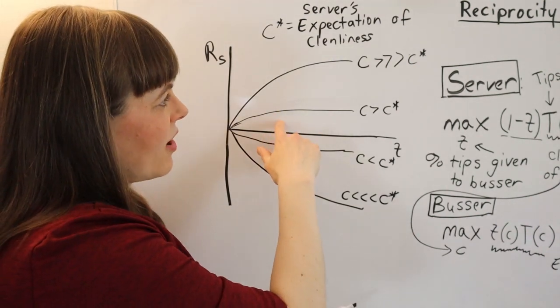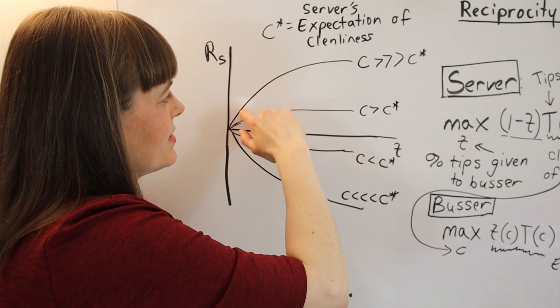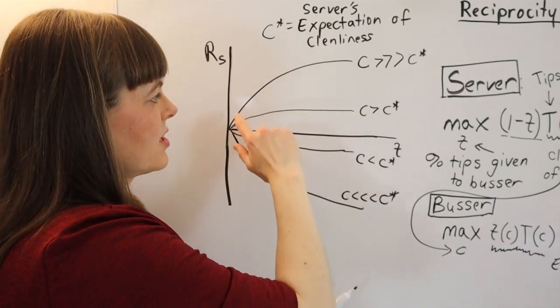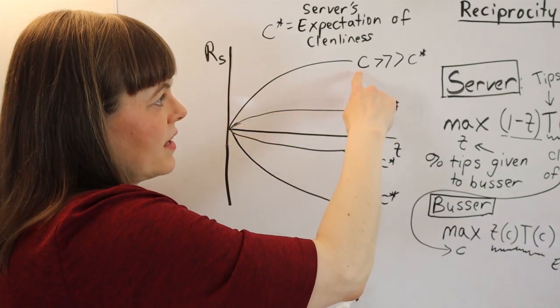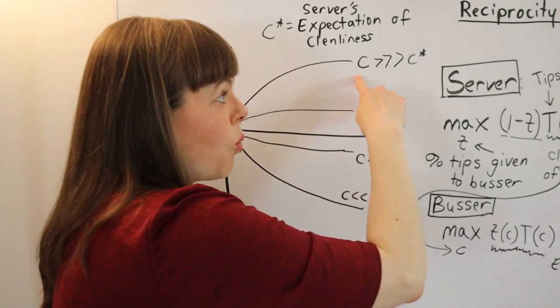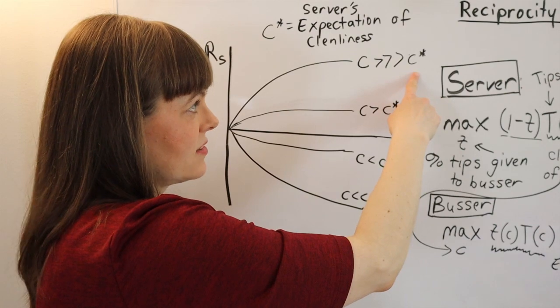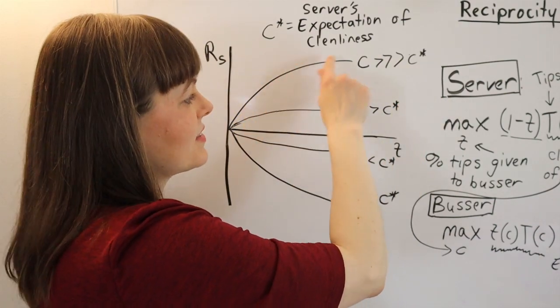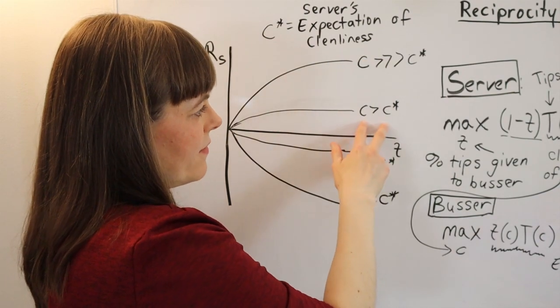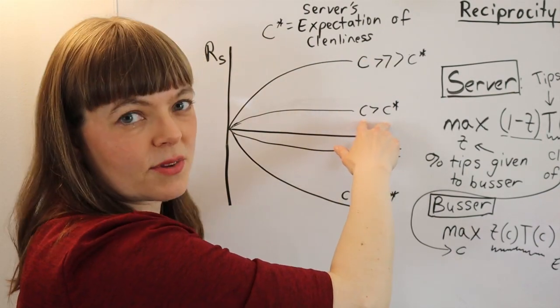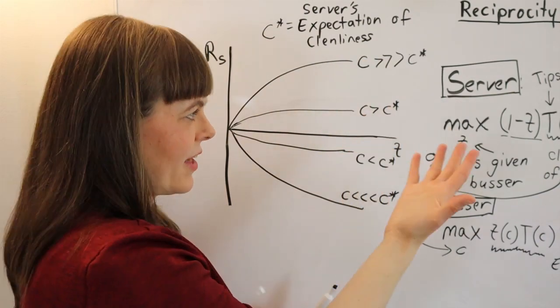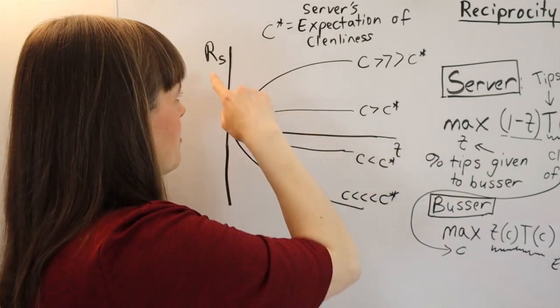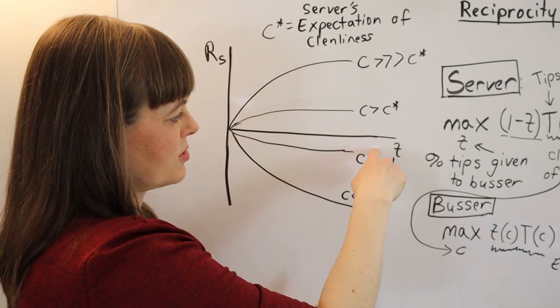That expectation is going to be important in determining whether she feels like she should be nice or mean to him, because it interprets his behavior. So here I have a situation where this would be the relationship with reciprocity she would have with the amount of tips she gives him. If he makes the tables way cleaner than she expects, she gets a lot of positive reciprocity from being nice to him. And if the server makes the tables a little cleaner than expected, but not that much cleaner than expected, we have a lower relationship between reciprocity and the tips she gives him.